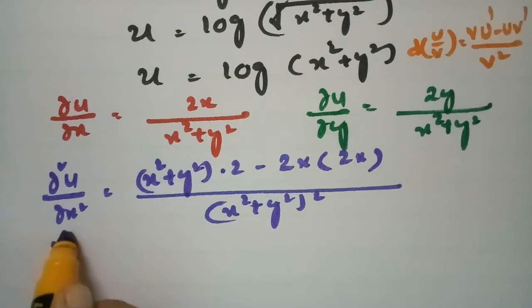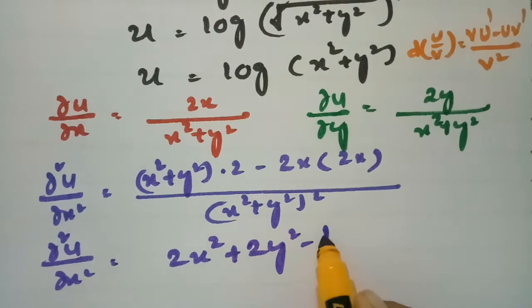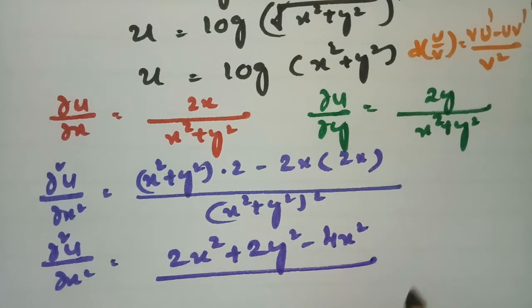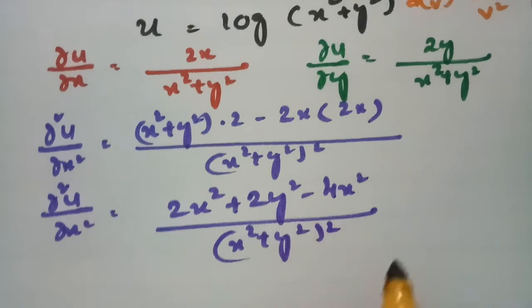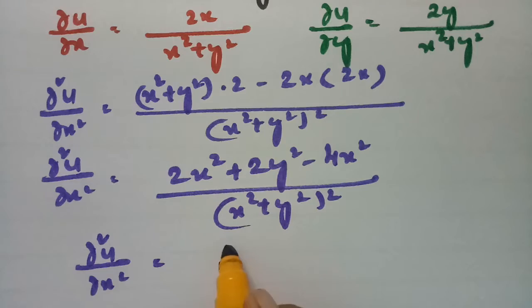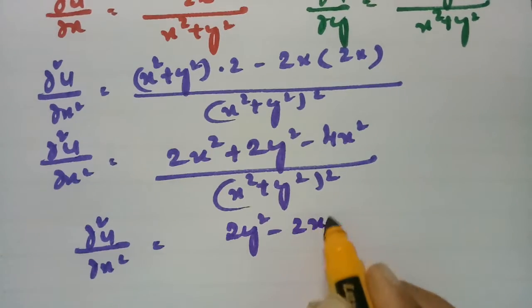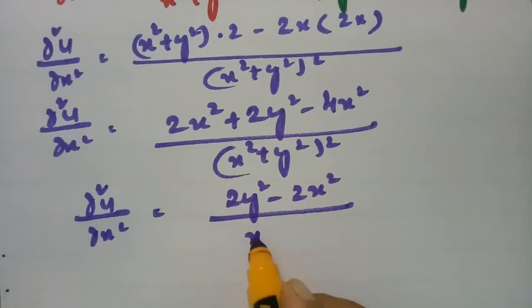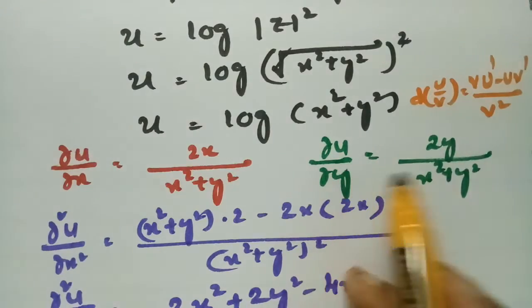So ∂²u/∂x² = (2x² + 2y² - 4x²) / (x² + y²)² = (2y² - 2x²) / (x² + y²)².